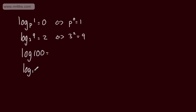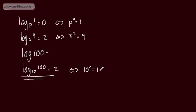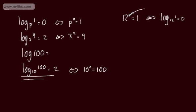Log to the base 10 of 100 — what power is 10 raised by to get 100? The answer is 2, so 10 to the power of 2 equals 100. For 12 to the power of 0, that equals 1, so the log statement is log to the base 12 of 1 equals 0. Also, 4 to the power of one-half equals 2, so log to the base 4 of 2 equals one-half. And log to the base 2 of 4 equals 2.